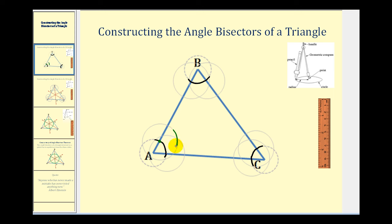Without changing the radius of the compass, we'll put the point of the compass at this point of intersection and swing another arc in the interior of angle A, which might look something like this. That's all we need to construct the angle bisector for angle A. The angle bisector will be the ray that starts at point A and passes through the intersection of these two arcs. Since this bisects angle A, we know these two smaller angles are congruent and half the measure of the original angle A.